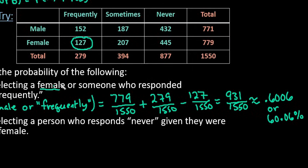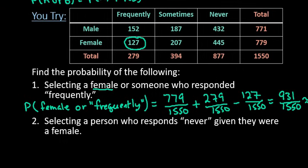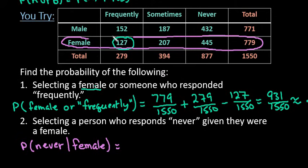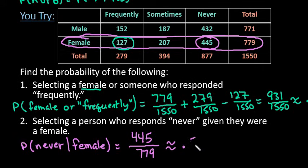And then the last one that I asked you to try is find the probability of selecting a person who responds never, given that that person was a female. So this time we are told that the person is a female, so I would look at this row. It has to be a female, we're omitting the males. So we would have 779 as our denominator, the never would be the 445. So we would put 445 over 779. And if we simplify this, we would get 0.5712 or 57.12%.